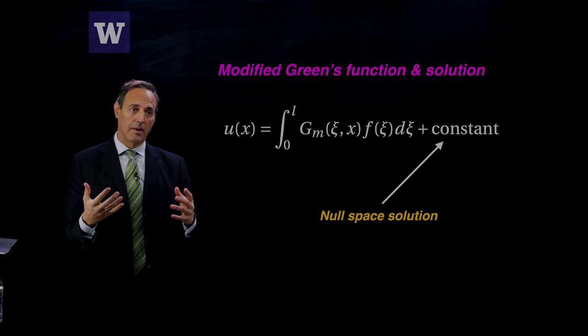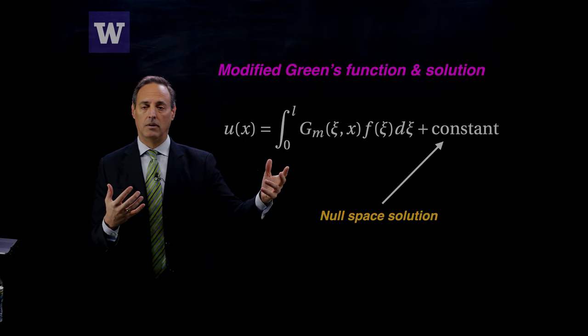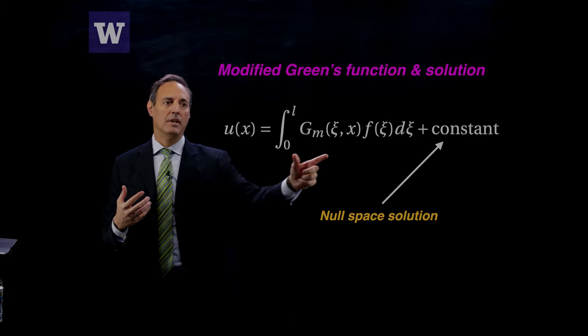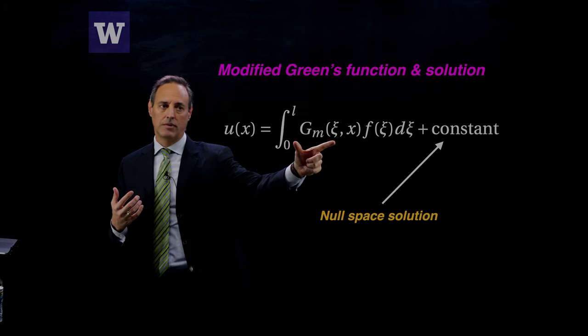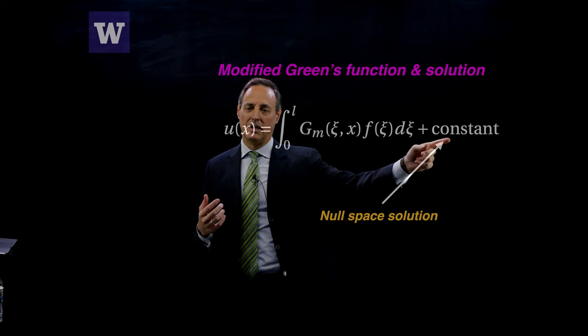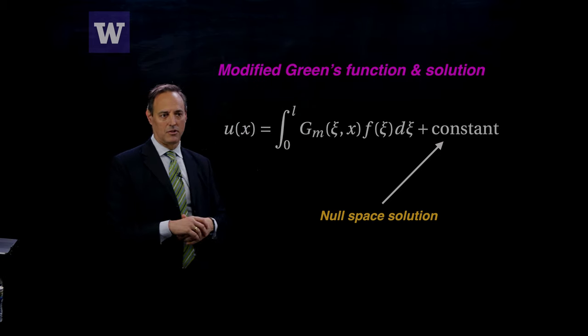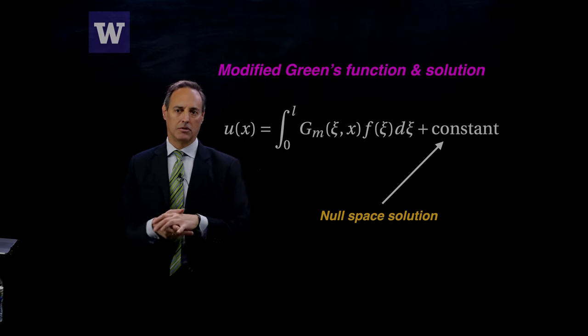The full solution, once you have this modified Green's function, is: U(x) equals the integral of the forcing function F against the modified Green's function, plus the null space, which in this case is a constant. This is the modified Green's function solution. You can still use the concept of a fundamental solution, but you have to modify it. Most of the techniques we continue to develop in this course — especially around perturbation theory — will revolve around this concept of solvability, and ensuring solvability is satisfied will give us a lot of the interesting structure we need to understand the problems we're solving.